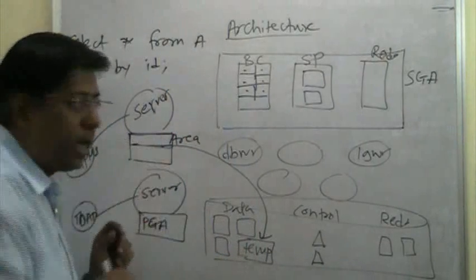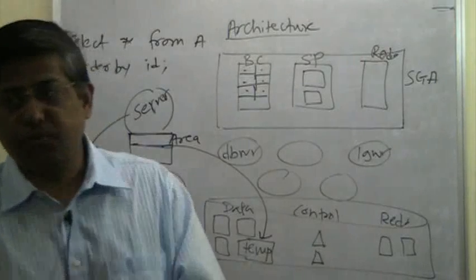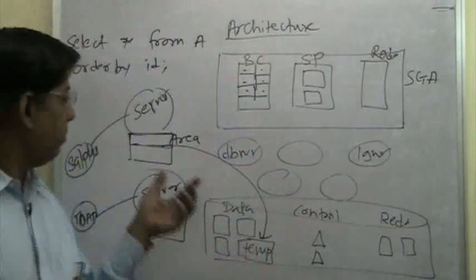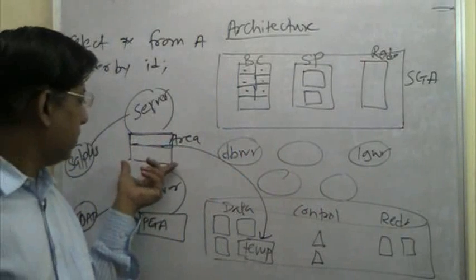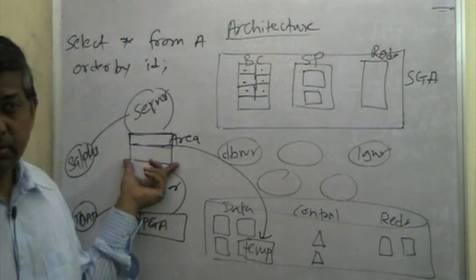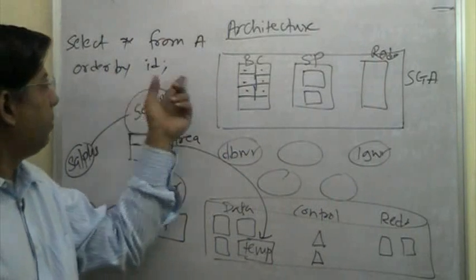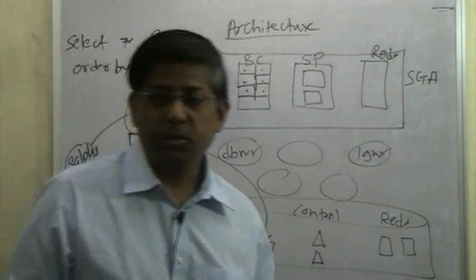Anytime the sort area is not enough, anytime the hash area is used for joining two tables within an algorithm called as a hashing algorithm, at that time you may be using the hash area there. So, all those areas will not be enough many times. Sometimes they will be enough depending on your data and depending on what you are doing. Then, in that situation, temporary tablespace storage is used.